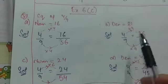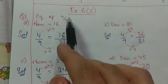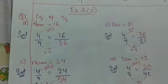So it is 16 upon 36. Now the second part is the equivalent of 4 by 9 where the denominator is 81.